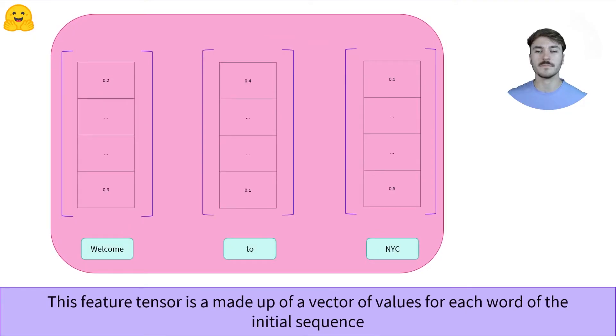Let's dive in this representation. It contains one vector per word that was passed through the decoder. Each of these vectors is a numerical representation of the word in question. The dimension of that vector is defined by the architecture of the model.